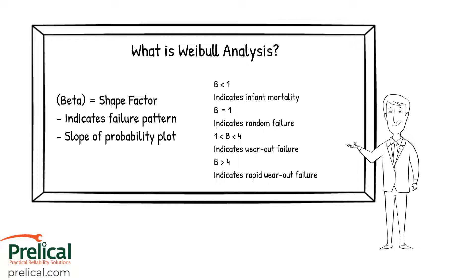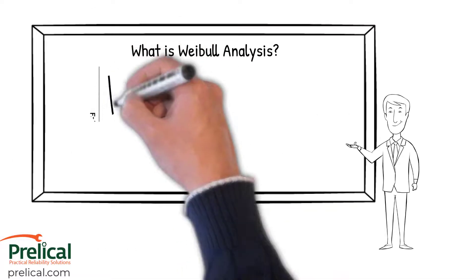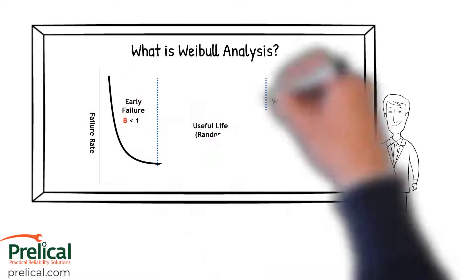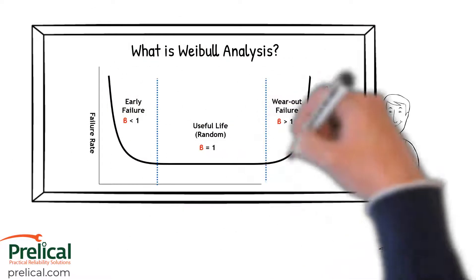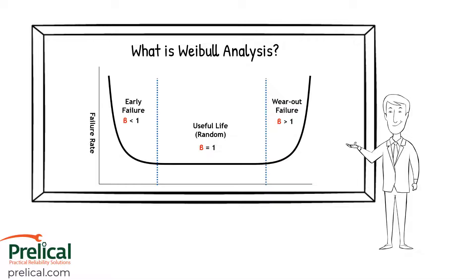One of the outputs of a Weibull analysis is the beta value, or the shape factor. This is going to indicate our failure pattern as well as the slope of the probability plot. A great way to see this is on the reliability bathtub curve. If we have a beta value of less than one, that means we're having an early life failure — meaning it could be an installation issue, a defective part, or for whatever reason it's failing very quickly after we install or start the component.